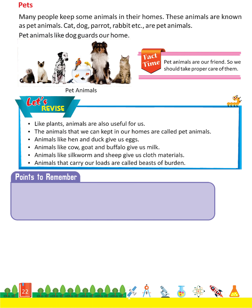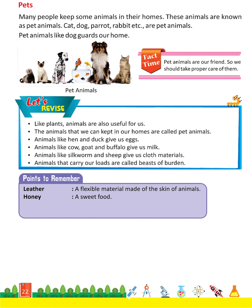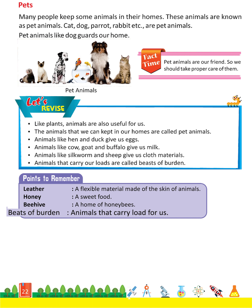Points to remember. Leather: a flexible material made from the skin of animals. Honey: a sweet food. Beehive: a home of honeybees. Beasts of burden: animals that carry load for us.